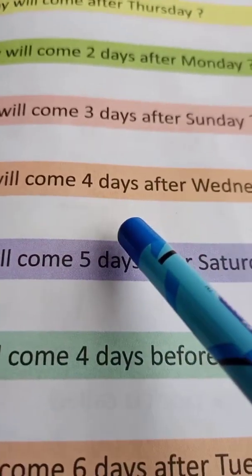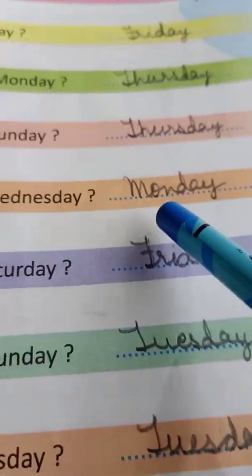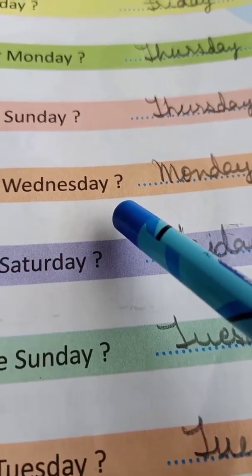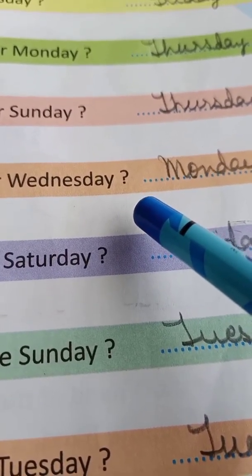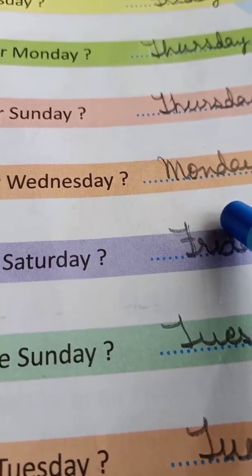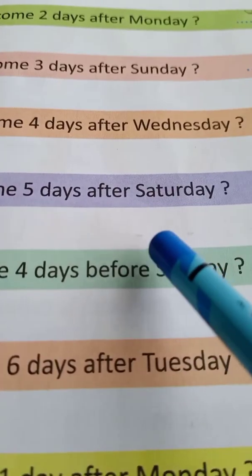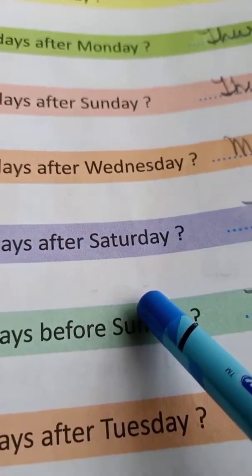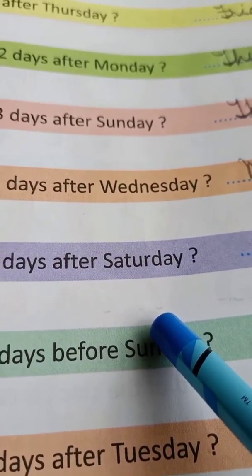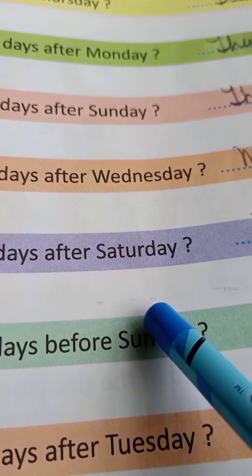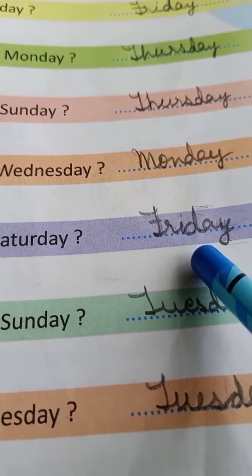What day will come four days after Wednesday? Count four days: Thursday, Friday, Saturday, Sunday — so Monday will come after four days of Wednesday. What day will come five days after Saturday? Count five days: Sunday, Monday, Tuesday, Wednesday, Thursday — so Friday will come.